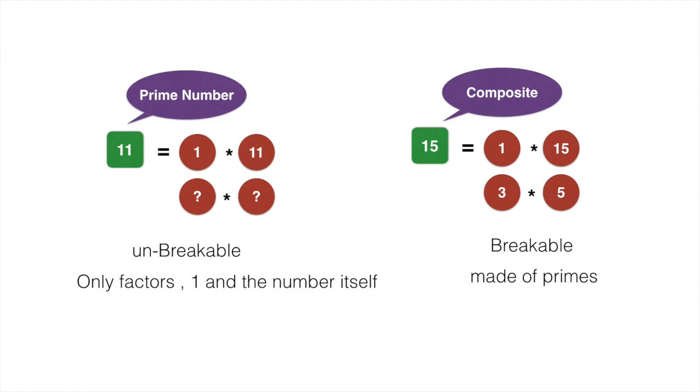And compare it to the other number 15, which can be rewritten as 1 into 15, as well as 3 into 5. That means 1, 3, 5, and 15 are factors of 15. So basically a composite number, even the word indicates composite means made up of more than one thing, so it is made up of other numbers. So 15 is made up of 3 into 5. That means 15 can be broken down. It is breakable. It is more like a molecule, whereas a prime number is like an atom.